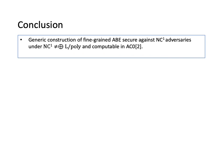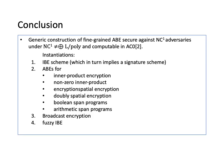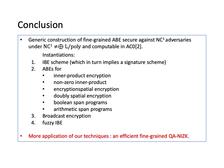This is the conclusion of our work. We proposed a general construction of fine-grained ABE scheme secure against NC¹ adversaries and computable in AC0². The assumption is a worst-case complexity assumption, which is very mild. It has many types of instantiations including a fine-grained IBE and a fine-grained signature scheme. Also, we know that our techniques can also be used to construct an efficient fine-grained QANISC. Please see our paper for more details. Thank you for your attention.